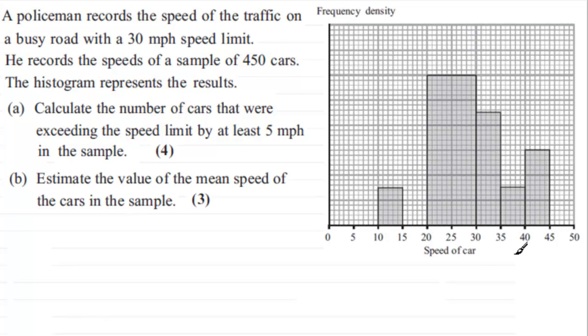And we've got two parts here. First part we've got to calculate the number of cars that were exceeding the speed limit by at least five miles per hour in the sample.